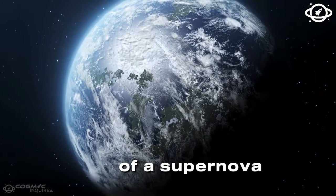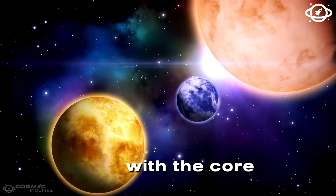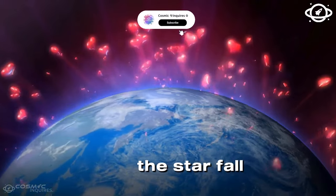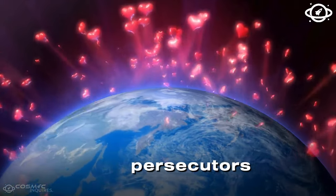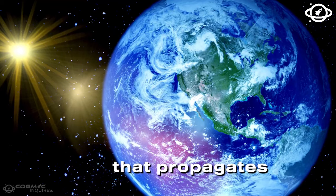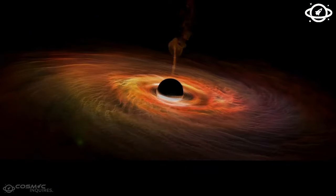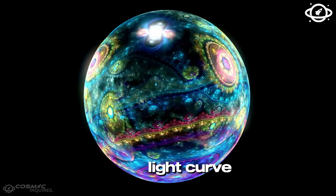The process of a supernova is a complex and violent event. It begins with the core collapse, which happens in a fraction of a second. The outer layers of the star fall inward at speeds of up to 43,000 miles per second, generating a shockwave that propagates outward. This shockwave heats the surrounding material, causing it to glow brightly and creating the supernova's characteristic light curve.